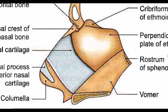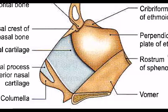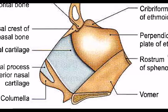The main bones of the nasal septum are the perpendicular plate of the ethmoid and the vomer. The frontal bone contributes via the nasal spine of the frontal bone. Below, we have the palatine bone contributing to the nasal septum.